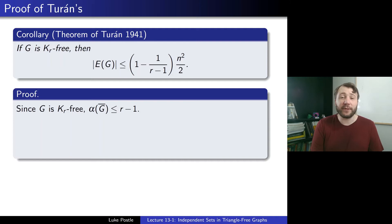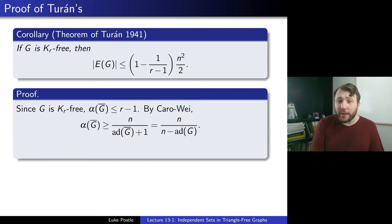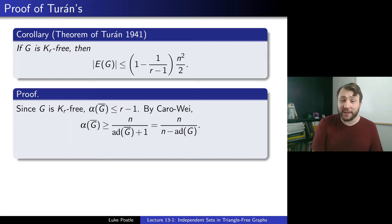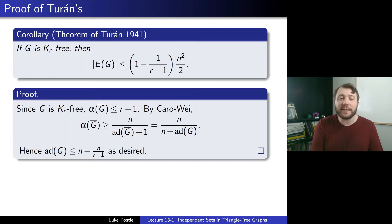Why does this follow? It's a corollary of Karo-Way. Since G is Kr-free, alpha(G-bar) — the independence number of the complement — is at most r minus 1, i.e., the clique number of G is at most r minus 1. Applying the Karo-Way corollary to G-bar gives alpha(G-bar) is at least n over (n minus average degree of G), since the degrees in G and G-bar sum to n minus 1. With a bit of arithmetic, the average degree of G is at most n minus n/(r-1), and dividing by 2 gives Turán's theorem.